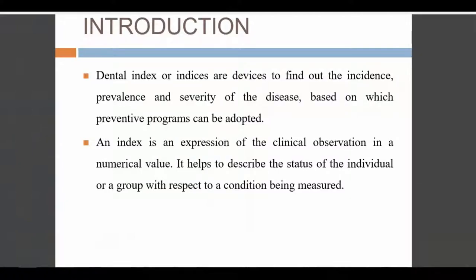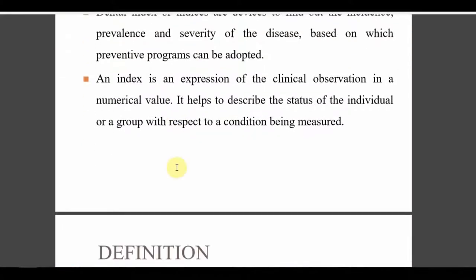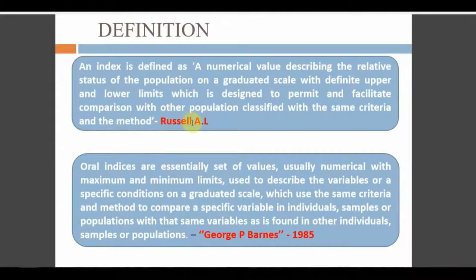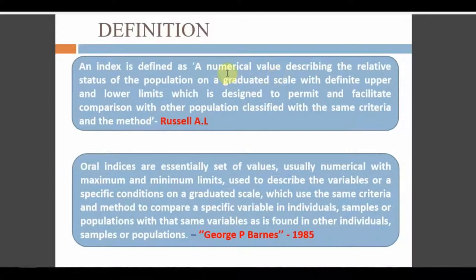An index is a number used to find out the incidence, prevalence, and severity of disease, based on which preventive programs can be adopted. We can express a clinical observation in a numerical value. The most common definition is given by SLAL: it is a numerical value describing the relative status of a population on a graduated scale with definite upper and lower limits, designed to permit and facilitate comparison with other populations classified by the same criteria and methods.